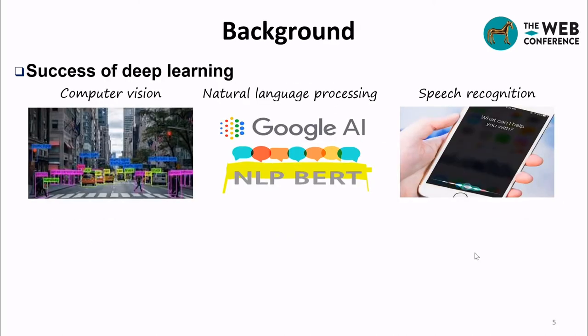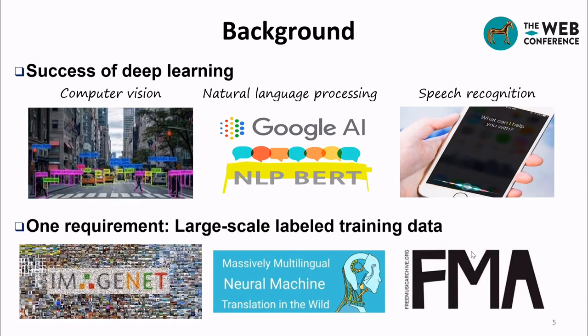Deep learning has achieved remarkable success in many areas, such as computer vision, natural language processing, and speech recognition. Training deep neural networks requires large-scale labeled training data, such as ImageNet in computer vision, massively multilingual neural machine translation in the wild, and free music archive.